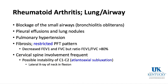Rheumatoid arthritis can affect the lung and airway. Beyond atlantoaxial subluxation risk, patients can have pleural effusions, lung nodules, pulmonary hypertension, and a restricted pulmonary function test pattern. A restricted pattern means a decrease in both FEV1 and FVC but preservation of the FEV1/FVC ratio greater than 80%.